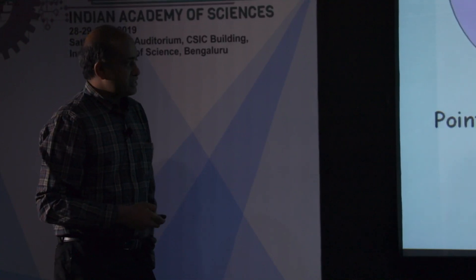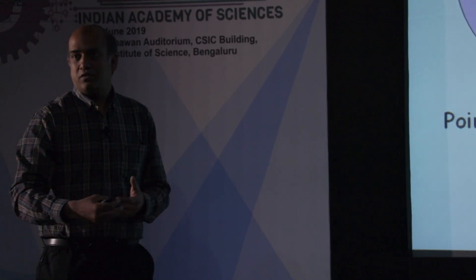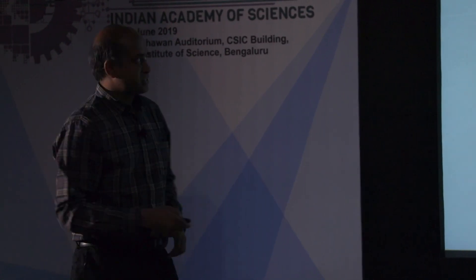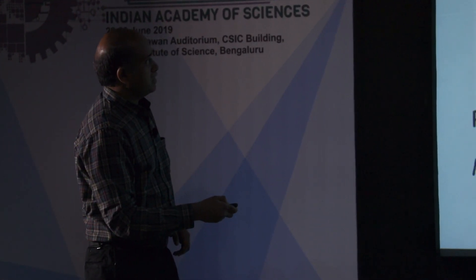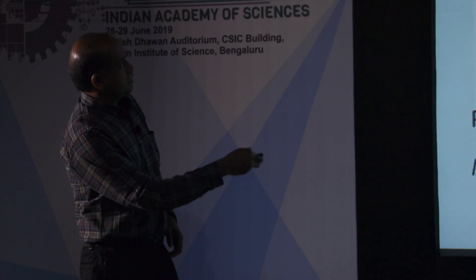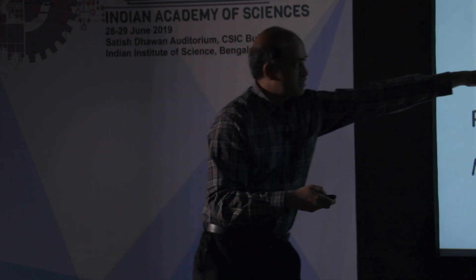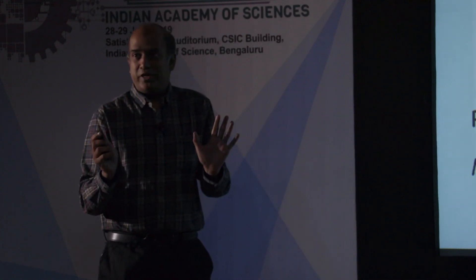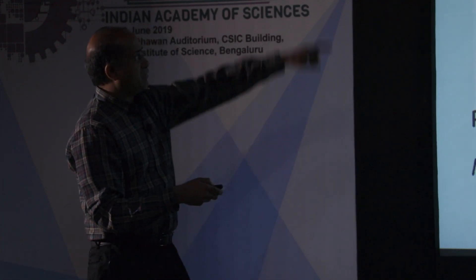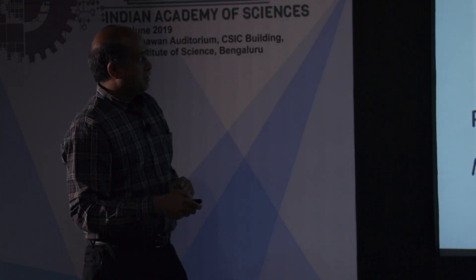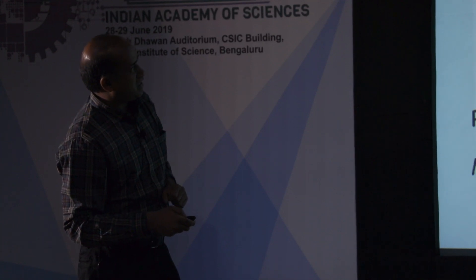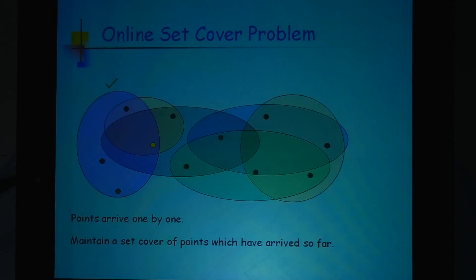In the online problem, instead of seeing all points at once, these points arrive one by one and you do not know which points will arrive. At some point you see a yellow point — that is the only point you see — so you pick the pink set. At some other point another point arrives; you say you are still covering it. Then another point arrives that is not covered, so you add one more set to your solution, and so on.